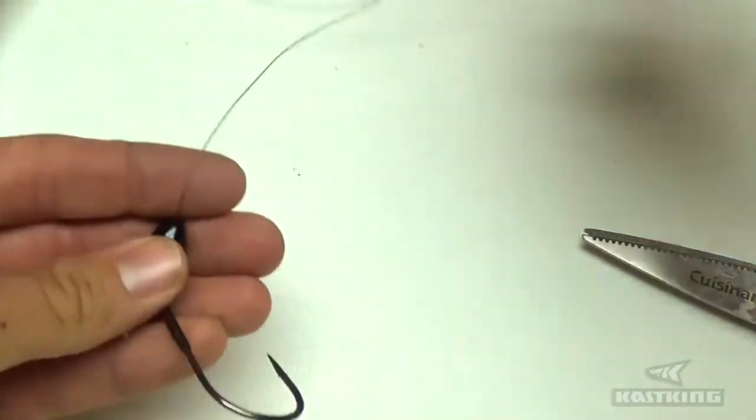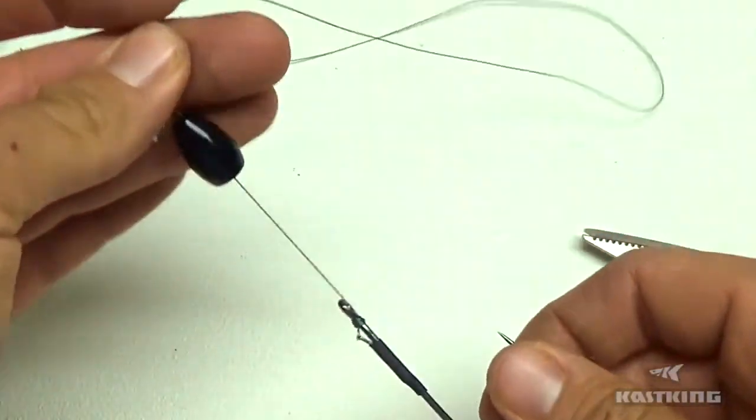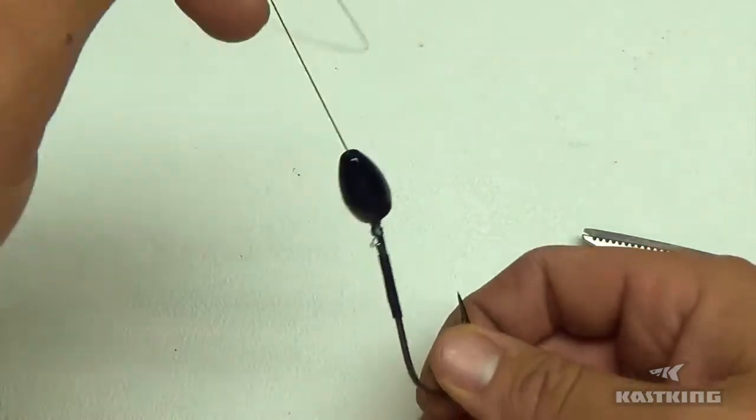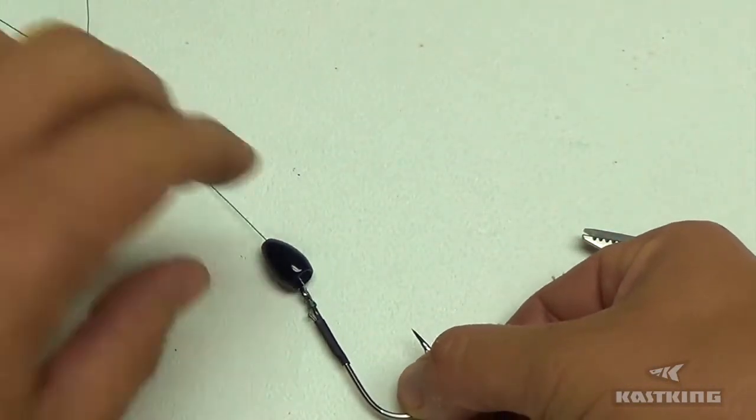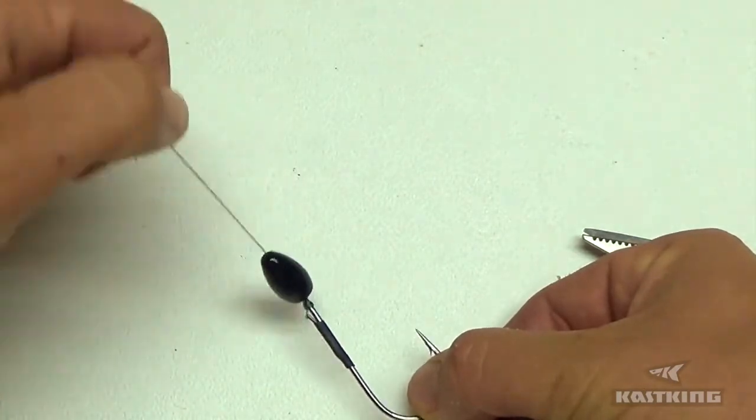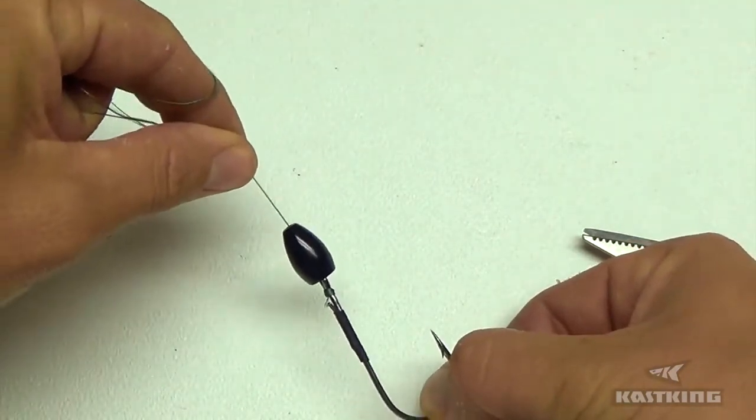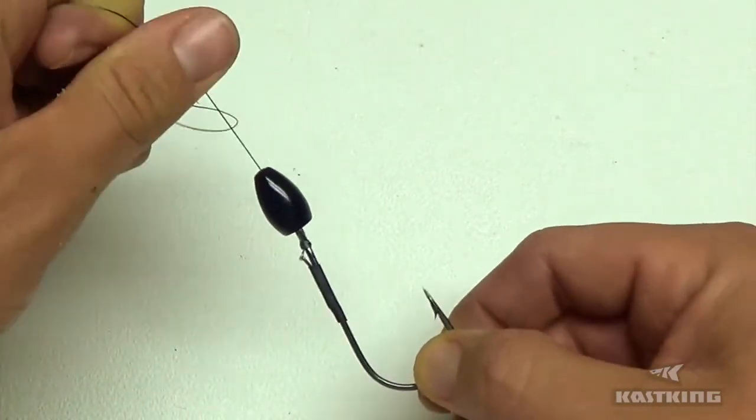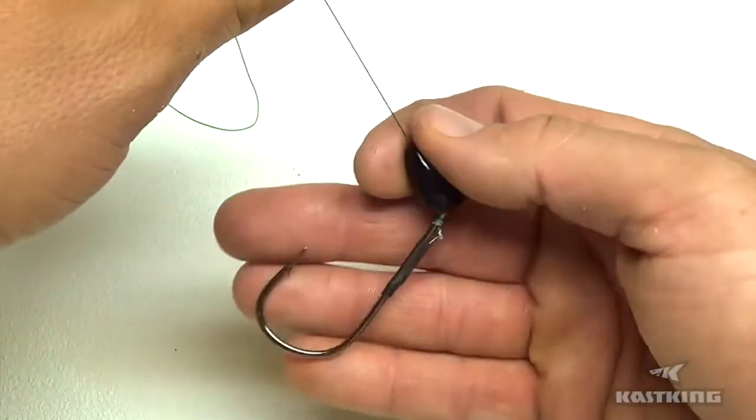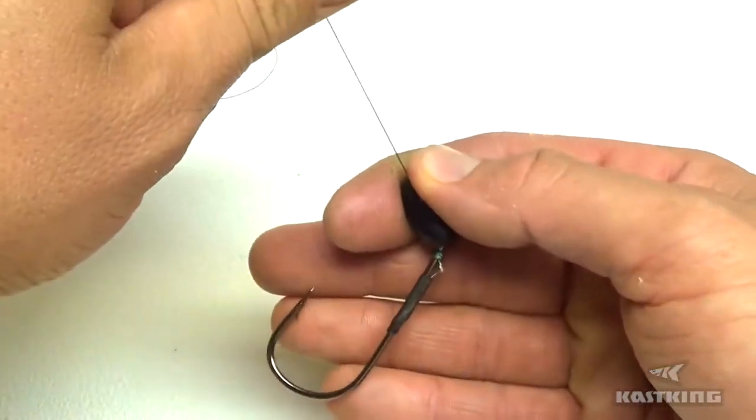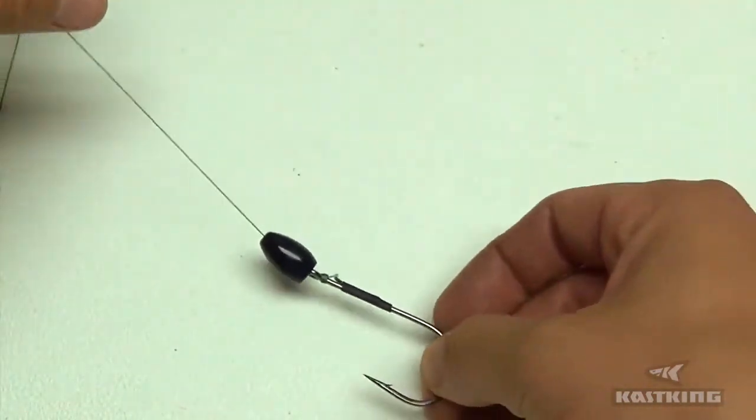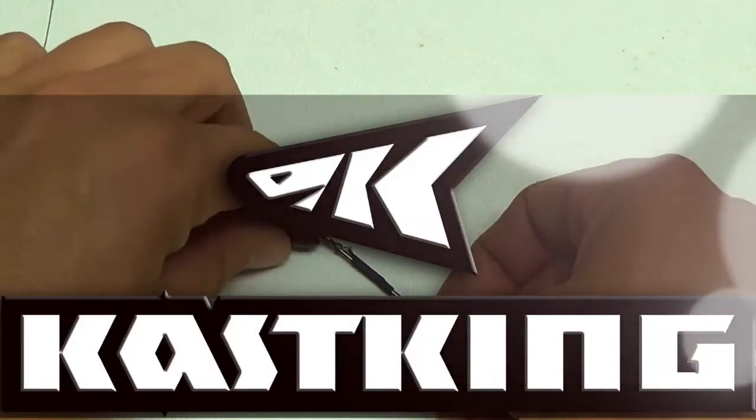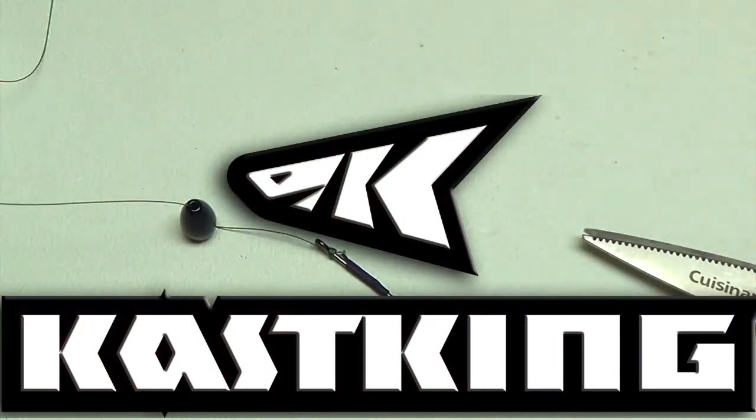So I think it can help your hook up ratio a little bit. It's just kind of a cool tip, and I mean, it's definitely not the only application for this knot. It's just a cool knot to know if you'd ever feel like you'd like to use it, but this is the main reason I use this snell knot. It just really makes that hook jump off to the side, and I think it can maybe help your hookups a little bit. So hopefully that's a tip that will help you out, so thanks for watching.